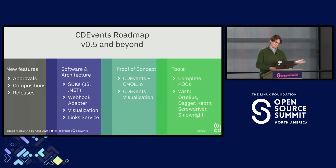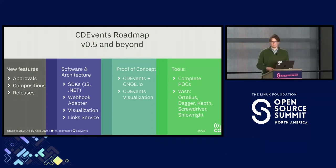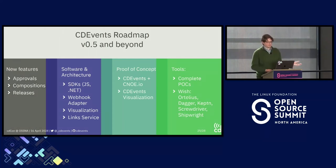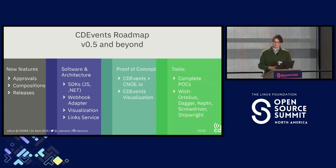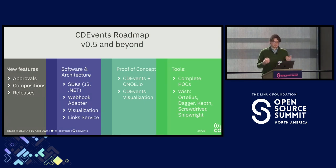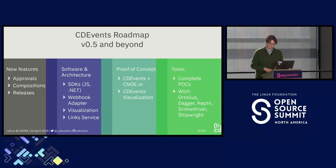For 2024 and beyond, we plan new features for the specification including approvals, composition, and releases for more complex software setups. On the software side, we have the webhook adapter, a visualization POC, plans to build more SDKs, and a link service to help maintain context across your workflow. We want to complete the POCs we have ongoing, complete the work with Harbor and Argo CD, and we have a wish list of tools including Ortelius, Dagger, Captain, Screwdriver, Shipwright, and many more. Everyone is really welcome.